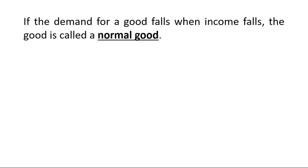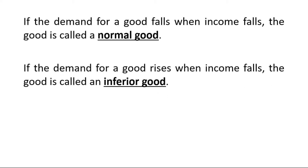If the demand for a good falls when income falls, the good is called a normal good — basically there is a direct relationship between income of a consumer and demand for a good in case of normal good. If the demand for a good rises when income falls, the good is called an inferior good, so there is an inverse relationship between income of the consumer and demand for a good in case of inferior good.